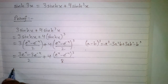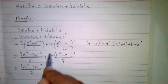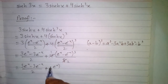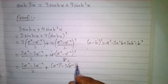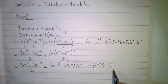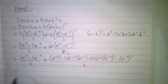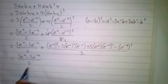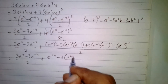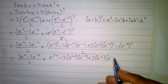So we have 3e to the power x minus 3e to the power minus x, upon 2, plus — cancelling 4 and 8 to get 2 in the denominator — we apply the formula to get: e to the power x cubed, minus 3 times e to the power x squared times e to the power minus x, plus 3 times e to the power x times e to the power minus x squared, minus e to the power minus x cubed, upon 2.